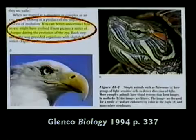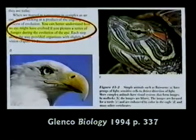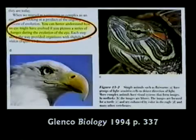Why doesn't God get the glory for what he made? This textbook arranges eyeballs of different animals in order from simple to complex, then tells kids: 'You can better understand how the eye might have evolved if you picture a series of changes during the evolution of the eye.' In other words, boys and girls, we'll arrange them in order — can't you imagine how it could happen? Evolution only takes place in the imagination, never in reality.